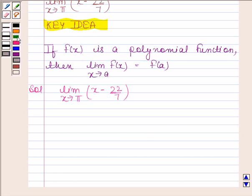By the key idea, limit of x minus 22 by 7 as x tends to π is π minus 22 by 7.